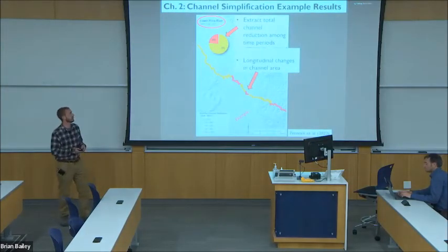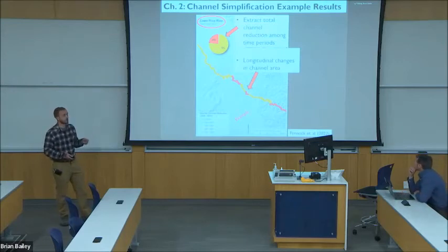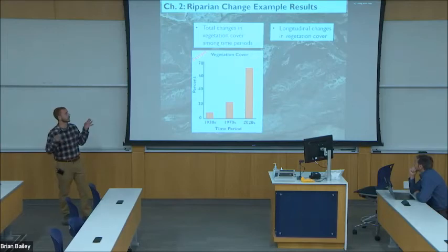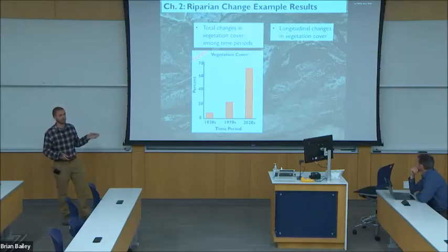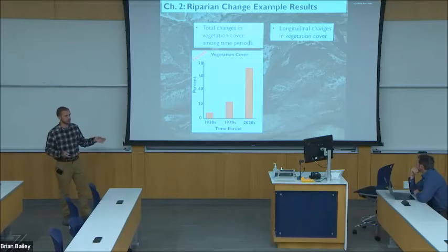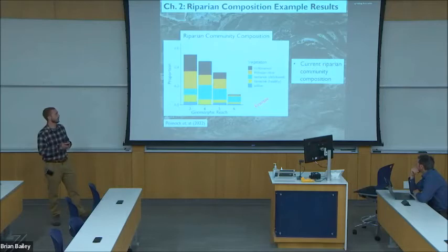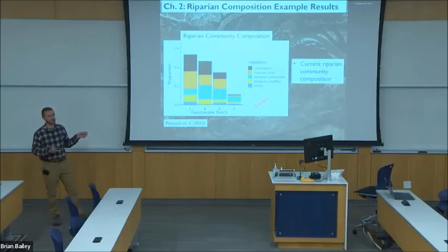From the channel simplification analysis, I will be able to extract total channel reductions among time periods, as exemplified in this pie chart from a similar analysis conducted on the Price River. I will also be able to report longitudinal changes in channel area as exemplified by this multicolored river line. Riparian change analysis will similarly allow me to report total changes in vegetation cover among time periods, as shown in this plot where we have percent vegetation cover on the y-axis and the different time periods on the x-axis, showing the theorized increase in vegetation cover over time. This analysis will also allow me to report longitudinal changes in vegetation cover, and riparian composition community investigation will allow me to report what kinds of vegetation are found along the river and show if there are differences in patterns in vegetation type among geomorphic reaches.